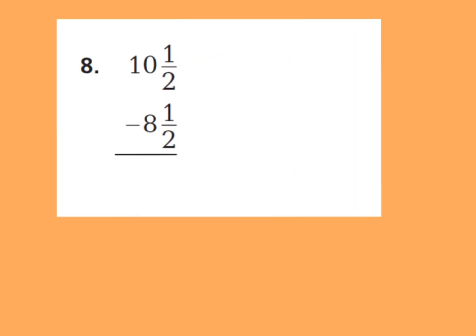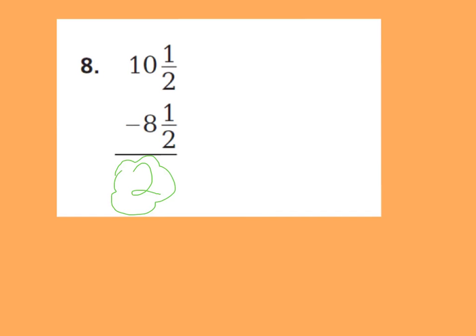Number 8 says 10 and 1 half minus 8 and 1 half. Let's subtract our fraction parts first: 1 half minus 1 half is 0 halves. You don't have to write 0 halves — just keep it blank. Then our whole numbers: 10 minus 8 is 2. So 10 and 1 half minus 8 and 1 half is just 2.